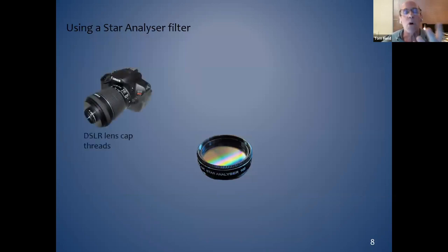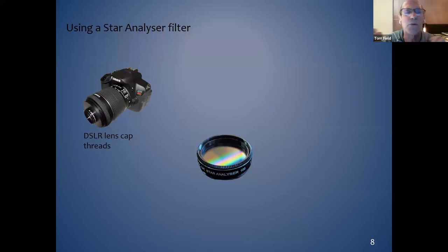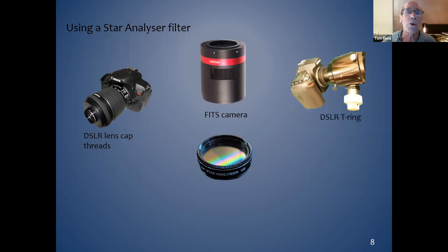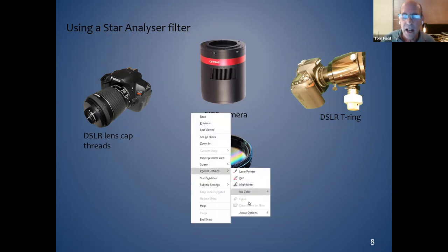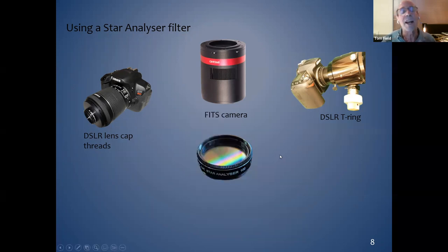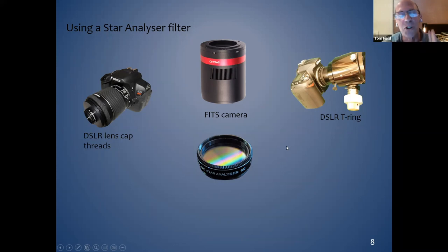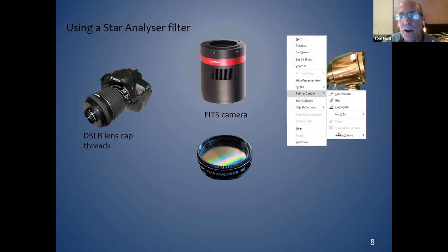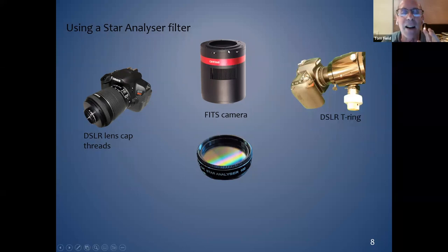I want you to see how easy it is to mount a Star Analyzer, because when I first got into this I didn't know much about back focus or focal length. What's remarkable is how easy it is to use a grating like this on almost any equipment. If you're a DSLR person, there's a little grating you can use. You can put it on your telescope with a T-ring adapter, or use it on an astronomical video camera. The ZWO series of cameras is very popular — you can even mount a grating in a filter wheel.